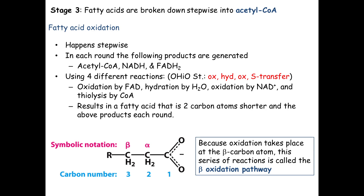The four reactions are: oxidation by FAD, hydration, oxidation by NAD, and breaking the bond using CoA. This should look familiar — it's very similar to the last three reactions of the citric acid cycle. We'll use the mnemonic 'Ohio State': oxidation, hydration, oxidation, and then a sulfur transfer — ST for the thiolysis. So Ohio State, because we don't stop at Ohio.